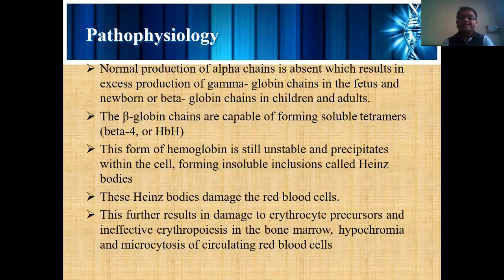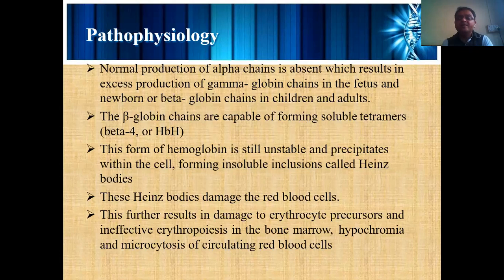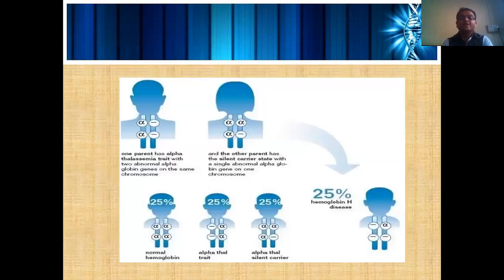The Heinz bodies damage red blood cells. The precipitate particles cause lysis of RBCs, which further results in damage of erythrocyte precursors and ineffective erythropoiesis in the bone marrow — where RBC synthesis is carried out — then hypochromia and microcytosis of the circulating red blood cells.